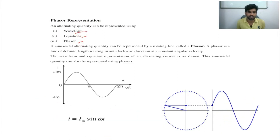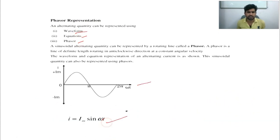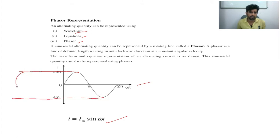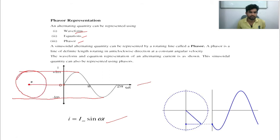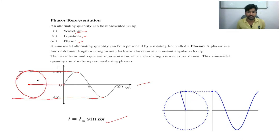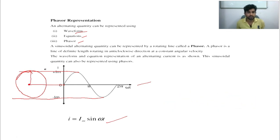We are going to discuss waveform, equation, and phasor. The waveform and equation are shown directly. The phasor is represented by a circular diagram — like a generator — where the central point marks the location of the alternating quantity, and the maximum value is shown by the rotating line.